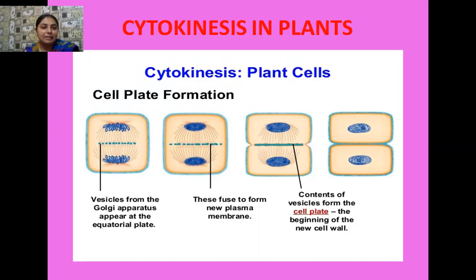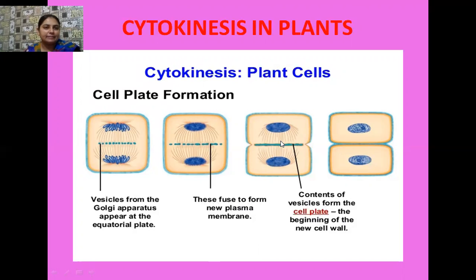These cell plates, which are the simple precursors, grow from the center towards the lateral position and join the cell wall of the adjacent daughter cells. These simple precursors, which are actually the cell plates, are later known as the middle lamella. So the middle lamella is found between the two adjacent daughter cells. The contents of the vesicle form the cell plate — that is the beginning of the new cell wall. When there is a growth of this cell plate towards the periphery from the center, it is known as centrifugal type of growth, and later it separates the two daughter cells.